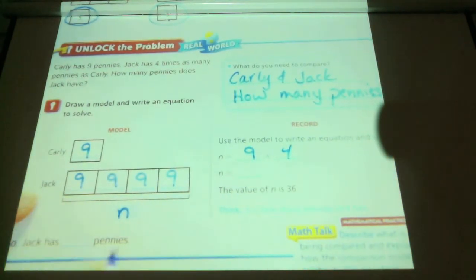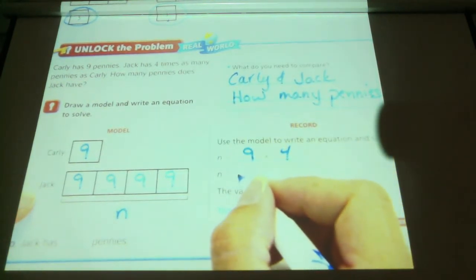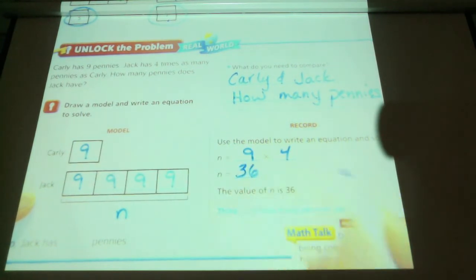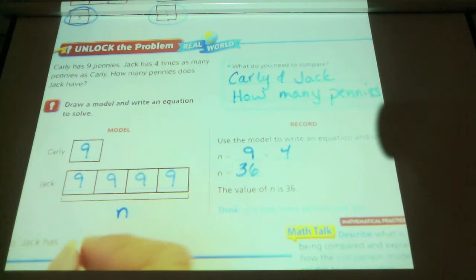So n equals? Anybody figure? Bella figured it out? What did you get, Bella? 36. So Jack has how many pennies? 36. 36.